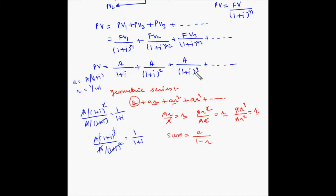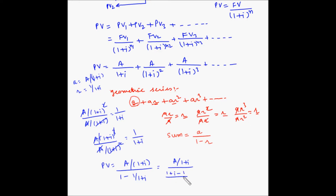So the present value equals [A/(1+I)] divided by [1 − 1/(1+I)]. Simplifying: taking LCM of the denominator gives (1+I−1)/(1+I), which equals I/(1+I). The (1+I) terms cancel, and this simplifies to A divided by I. Therefore, PV equals A divided by I. This is the mathematical derivation of the present value of a perpetuity formula.